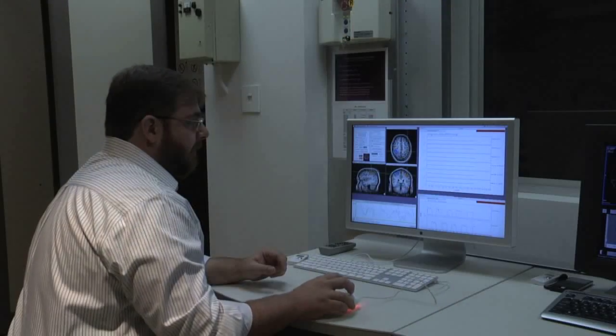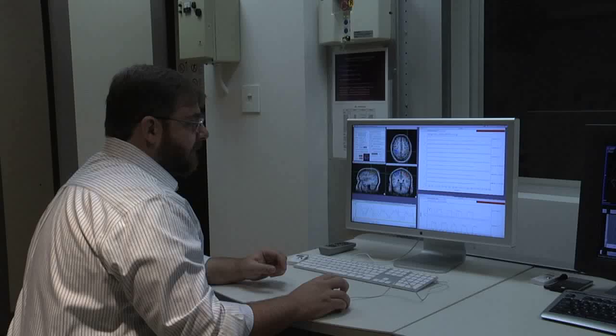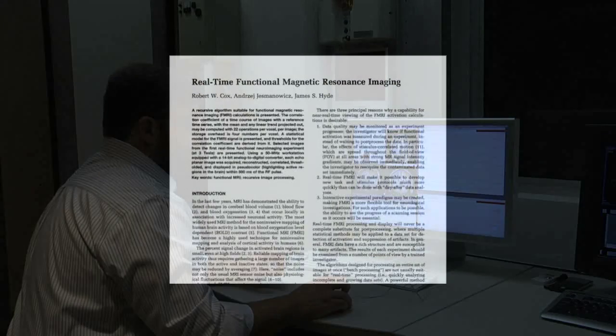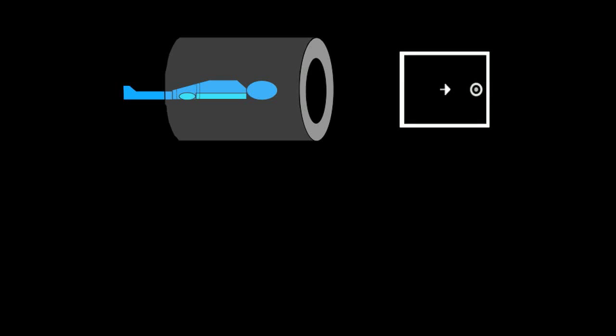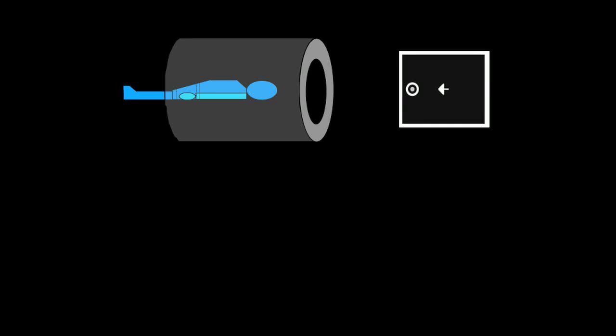Real-time fMRI was first described in 1995 by Dr. Bob Cox and refers to the analysis of fMRI data as it is being acquired. This simple cartoon illustrates a typical real-time fMRI experiment. As in any fMRI experiment, a subject performs a task while in an MRI scanner that is actively acquiring a 3D movie of the subject's brain activity.